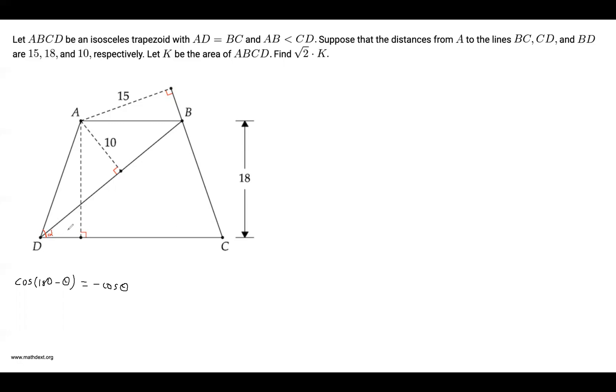And since this is an isosceles trapezoid, this angle is also alpha. And since AB is parallel to CD, this angle is also alpha.